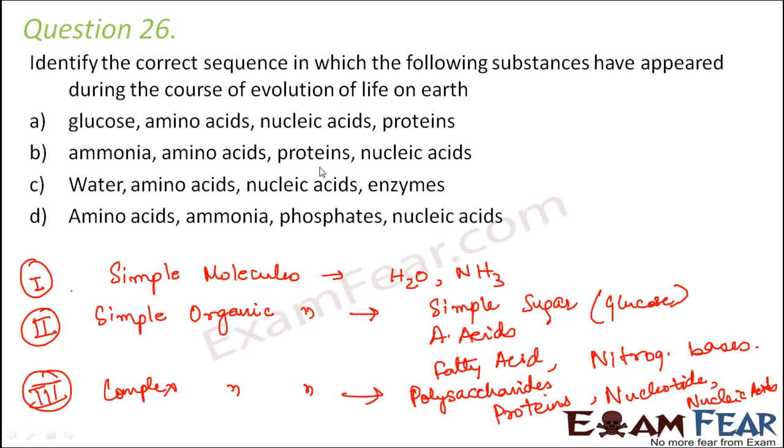When you compare proteins with nucleic acids, even though proteins and nucleic acids all were formed during phase 3 because they all are complex organic molecules, if you look at the formation of proteins, proteins were formed by collection of many amino acids. But nucleic acids were formed by combination of nitrogenous base with sugar and phosphoric acid. So that formed nucleotide, and when many such nucleotides combined, it formed nucleic acids. So basically, nucleic acid is like one step ahead of proteins.